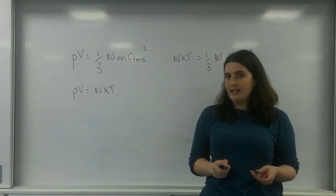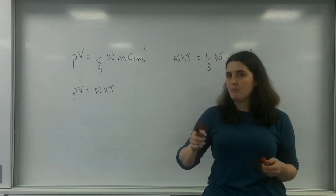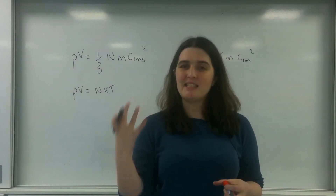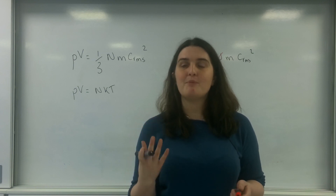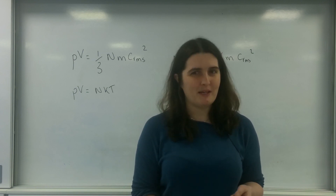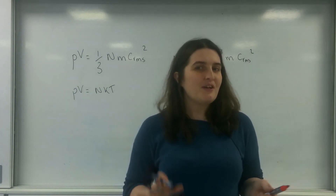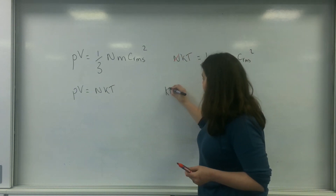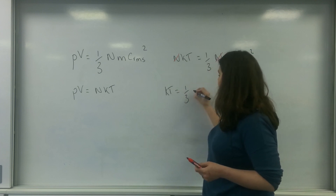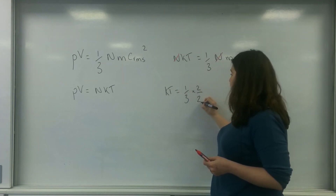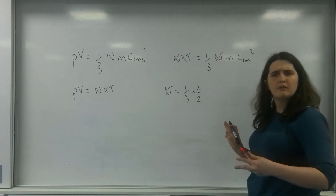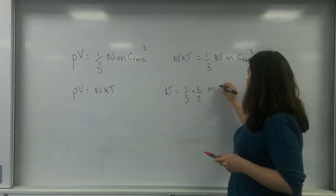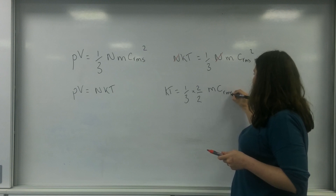Now I'm going to do something a little bit cheeky — a trick that comes up a lot. If you go to university you'll find this in lectures, especially with things like Reynolds numbers if you do aerospace. I'm going to have nKT equals one-third times by two over two, which equals one. Two divided by two is definitely equal to one. Then times by MC_RMS squared.